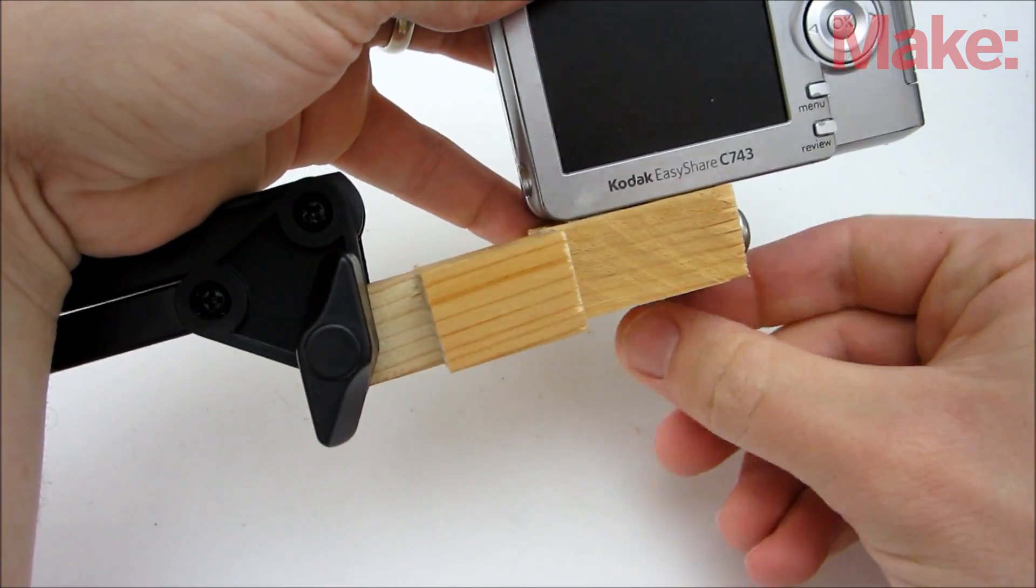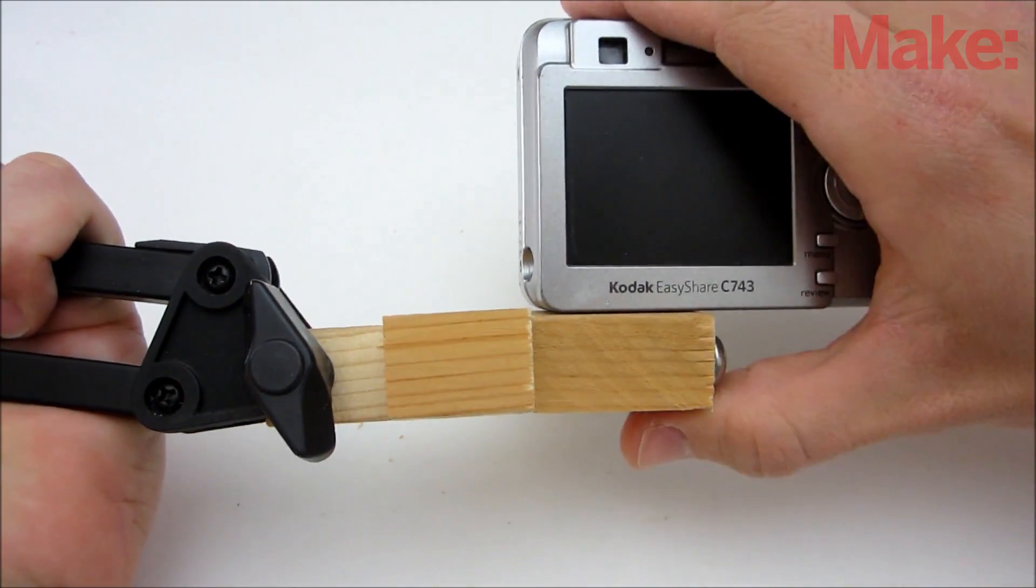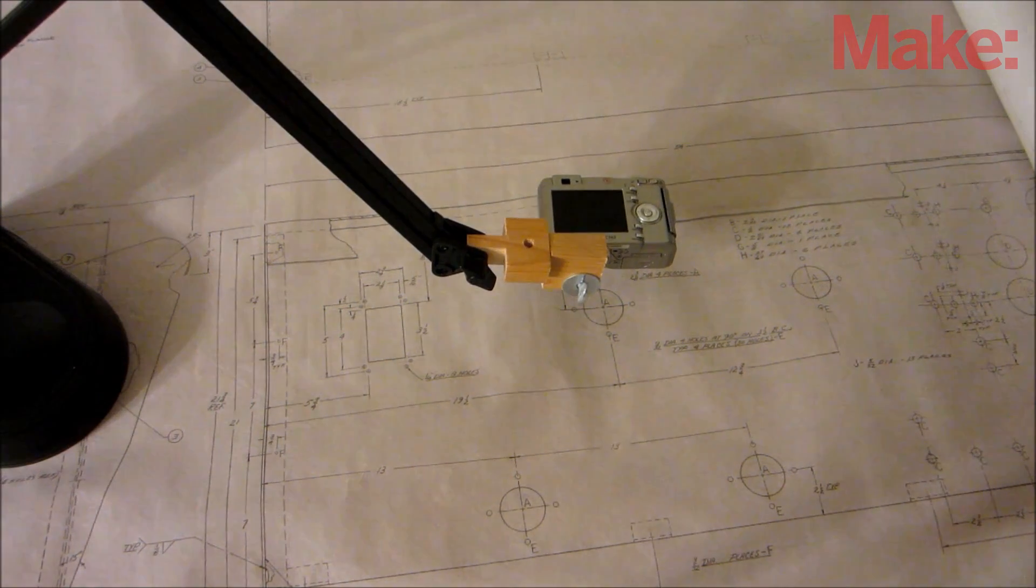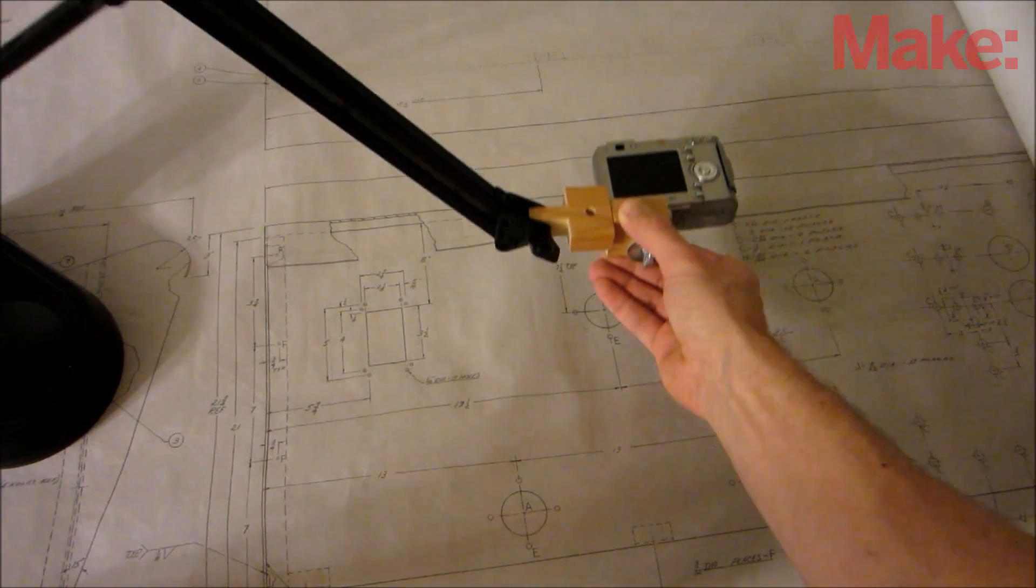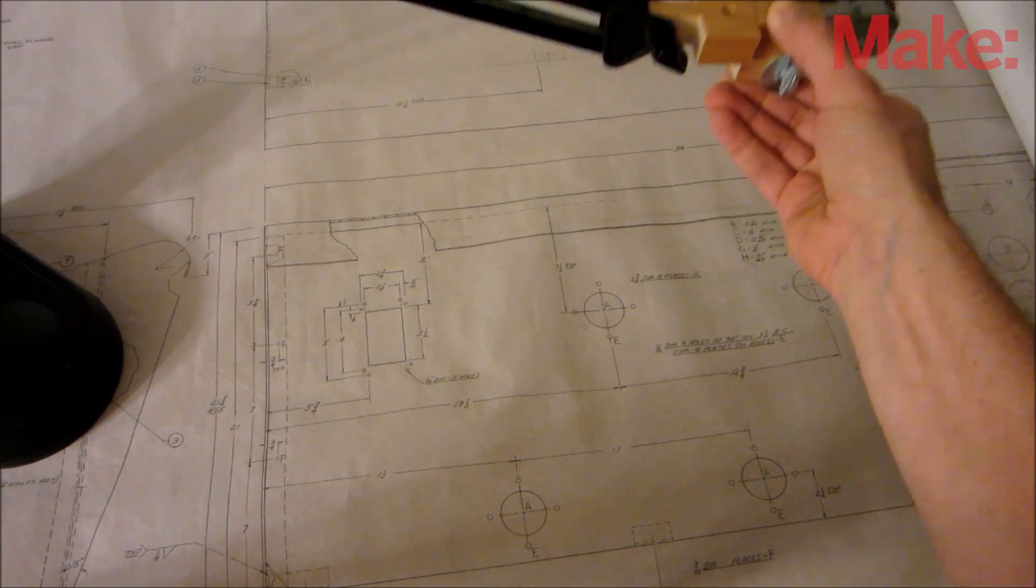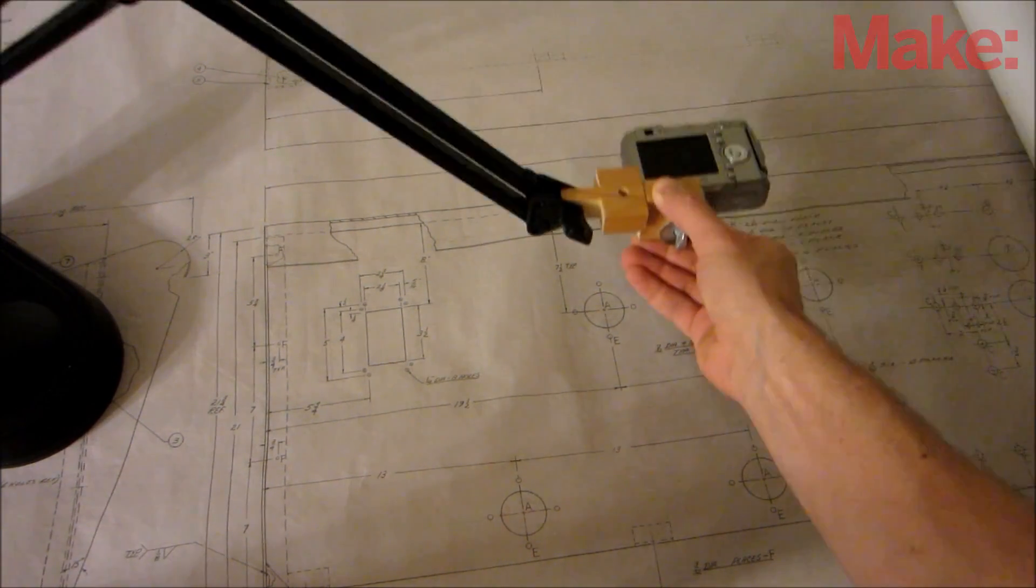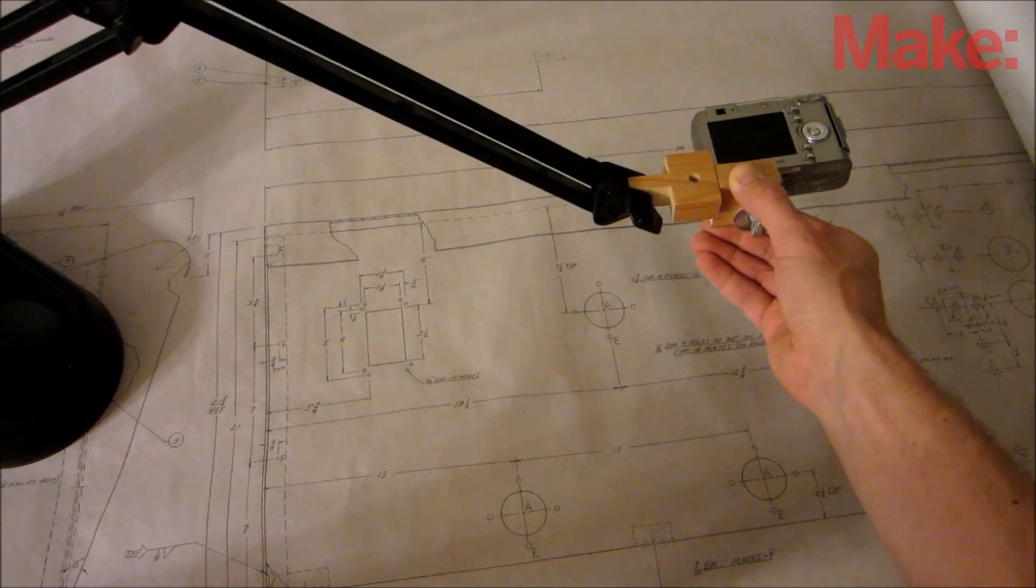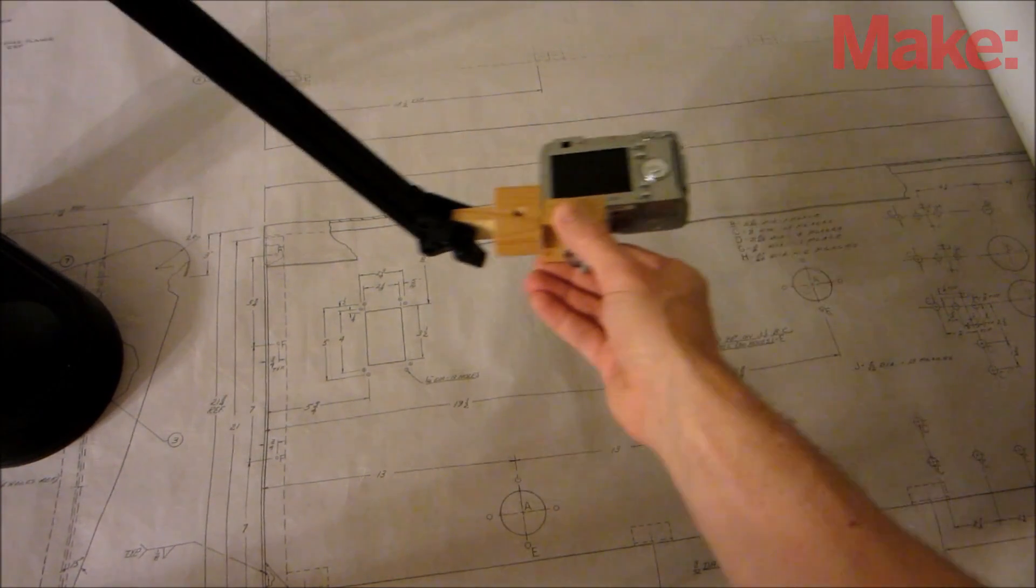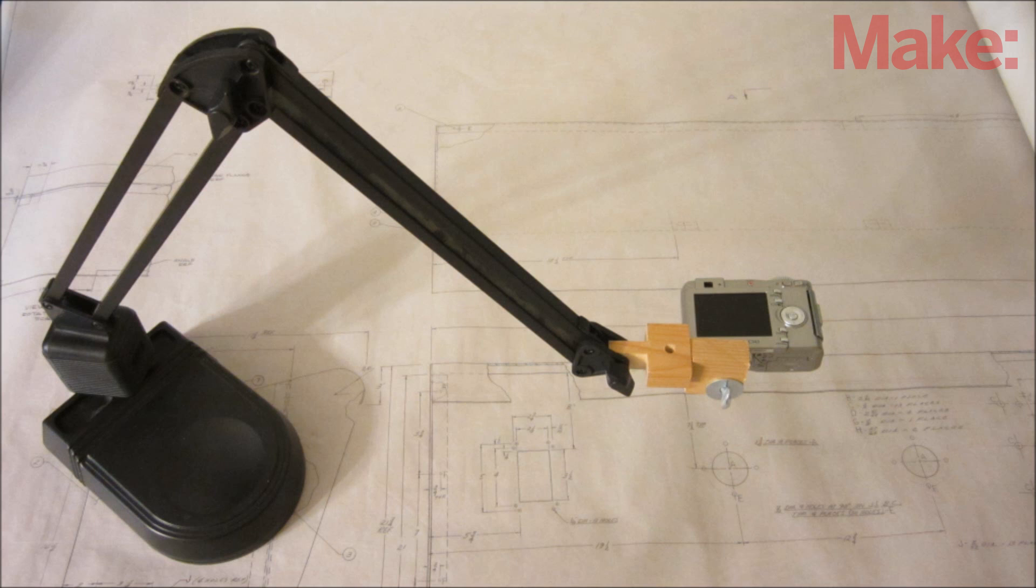Now it's time to try it out. The base of the stand can be placed off to the side where it's out of the way. You can then swing the camera around to get pictures of your subject from just about any angle. You can take pictures straight down, you can get the camera really close to the surface of the table. You can do a lot of things that would be impossible for a standard tripod. Well, that's how to make a simple articulated camera stand.